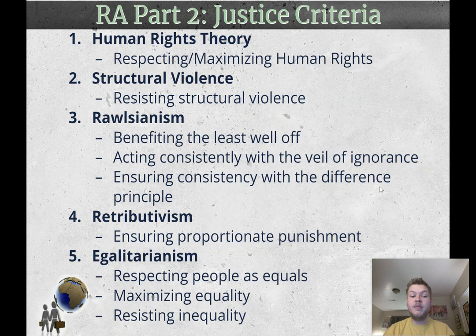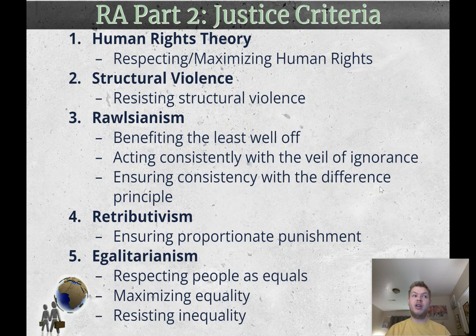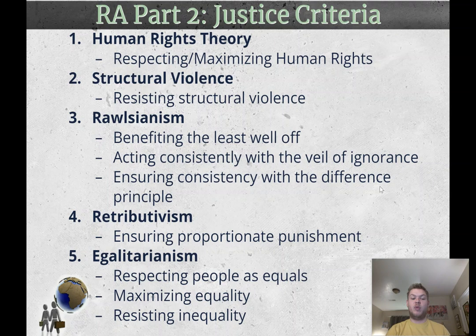Fourth is retributivism or retributive justice, centered around punishment and crime prevention. A good criterion would be ensuring proportionate punishment — the correct people are being punished in the correct way and amount, and the wrong people are not being punished. Fifth and finally, egalitarianism or equality — respecting people as equals is one way to phrase it. You could also say maximizing equality or resisting inequality. All of these are branches of philosophy you could use to form your value criterion.